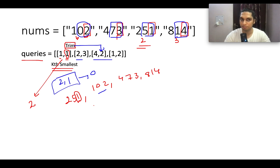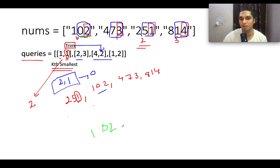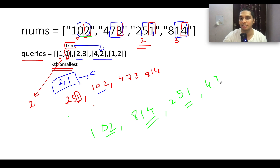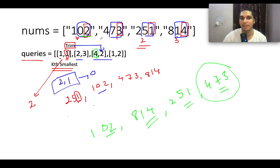Now performing the sorting operation on those 2-digit substrings: 02 is the least, so 102 comes first. Next is 14, so 814 comes second. Then 51, so 251 is third. Then 73, so 473 is fourth. The query asks for the 4th smallest element, which is 473. It occurs at index 1 in the original array. So the answer corresponding to this query is 1.